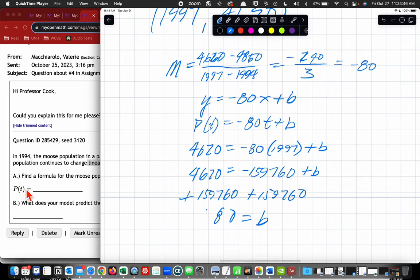which means I get b is equal to 163,461. I think that's what I get.